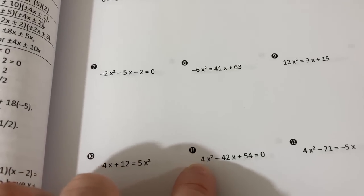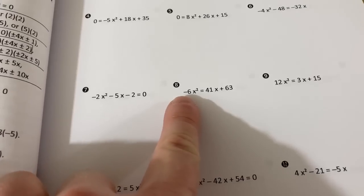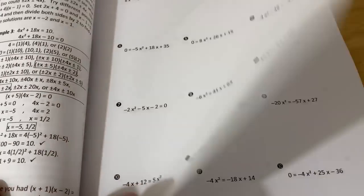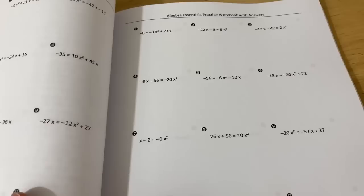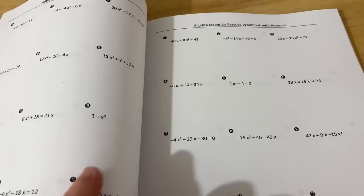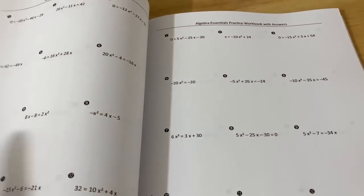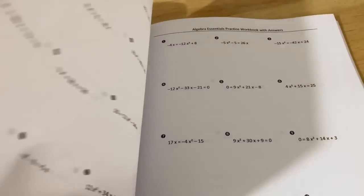And look, the leading coefficient is not 1. It's a 4. Here it's a negative 6. And so you're going to get examples that are a little bit more challenging. And then you have answers to all of those examples. That makes this an incredible book to master your factoring abilities.